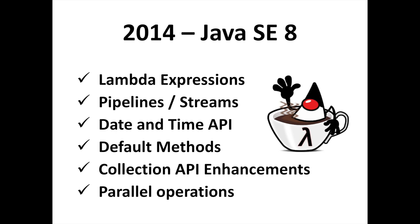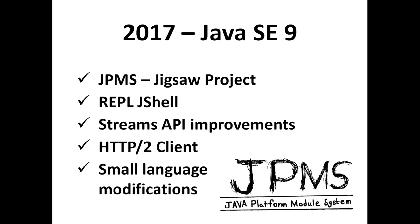Java 8 Spider was released in March 2014 and included several features planned for Java 7 but deferred. Java 8 is a real revolution with the addition of possibilities to make functional programming in Java, under JSR 335 and the project Lambda. It integrates Lambda expressions, streams, and default methods. The date and time API was also added, based on the famous Joda Time API.